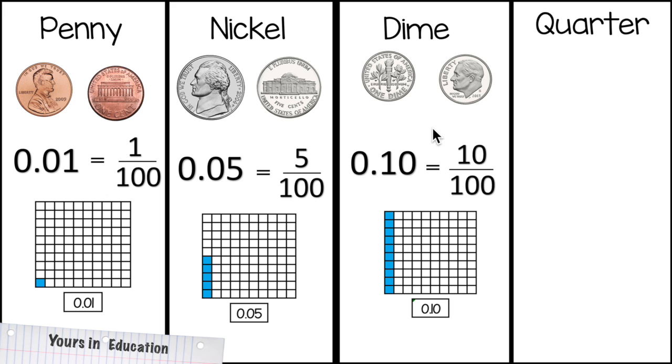The value of a dime is 10 cents, this is how you write 10 cents in decimal form. And in fraction, it's 10 out of 100, again because a dollar has 100 cents. This is how you represent it on a model, we have 10 out of 100, and again in decimal, it's 0.10.